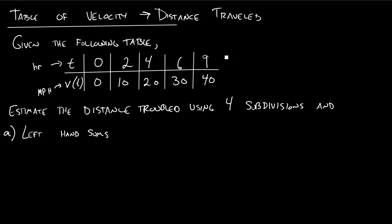In this problem we get a table of velocities and they want us to get distance. So basically what's happening is they tell you at hour 0 your car is going 0 miles per hour. At hour 2 your car is going 10 miles per hour. You're a slow driver.